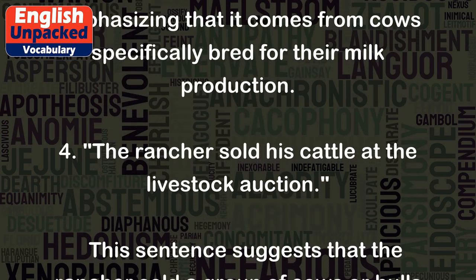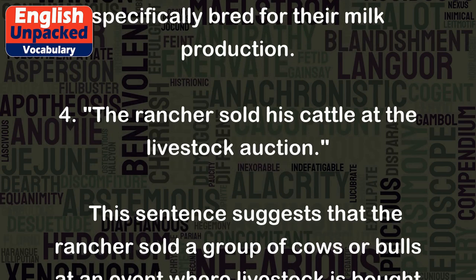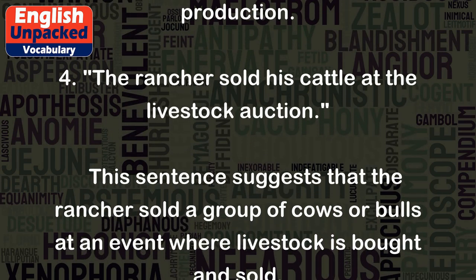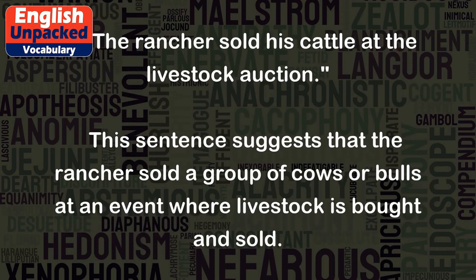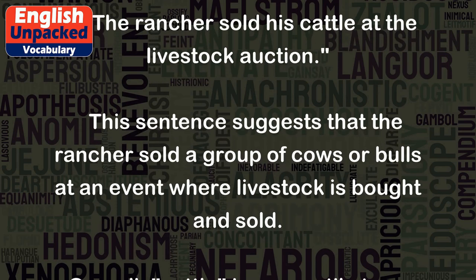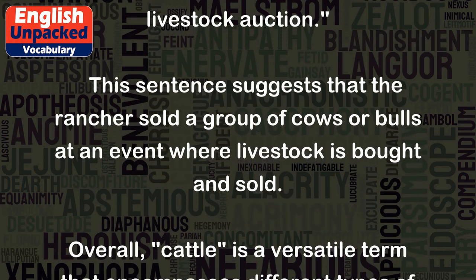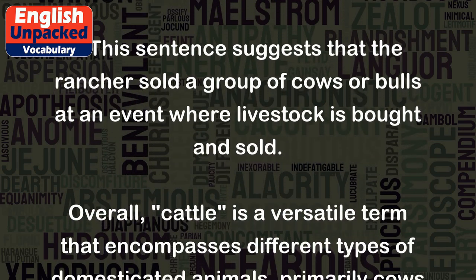4. The rancher sold his cattle at the livestock auction. This sentence suggests that the rancher sold a group of cows or bulls at an event where livestock is bought and sold.